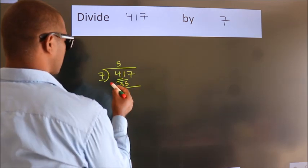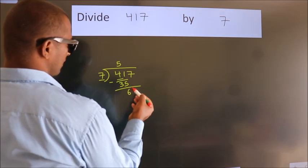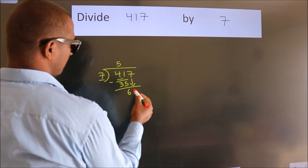Now, we should subtract. We get 6. After this, bring down the beside number. So, 7 down.